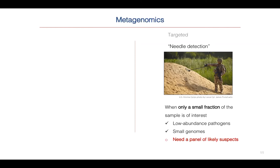Targeted metagenomics is particularly good for low-abundance pathogens with small genomes. It's no surprise that's how we sequence HIV, and essentially the method I'm describing is very similar to how we've been sequencing HIV for PANGEA, POPAT, and BEEHIVE. So what do we need here? If we're sequencing a pathogen of interest, we need a panel of likely suspects.